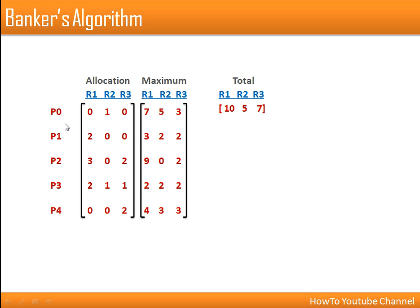The allocation matrix represents how many resources are already allotted to each process. For process P0, it has no R1 resource, only one resource of R2 type. Its maximum requirement is seven of R1, five of R2, and three of R3, with one already allotted. So P0 still needs seven R1, four R2, and three R3 resources.